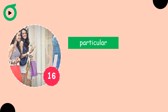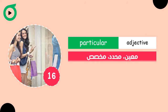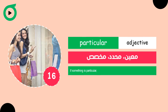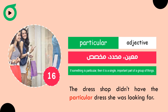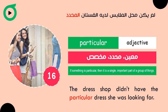Particular. If something is particular, then it is a single, important part of a group of things. The dress shop didn't have the particular dress she was looking for.